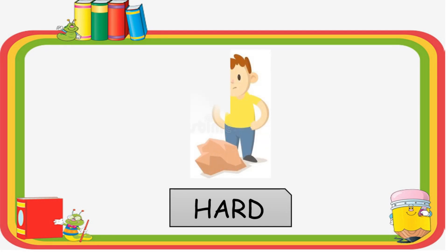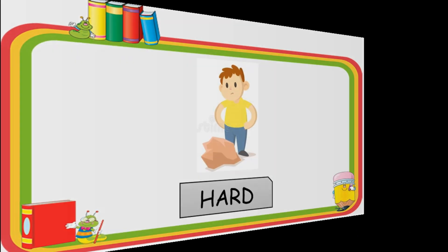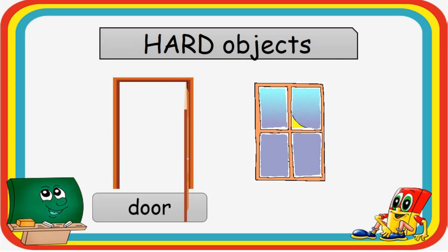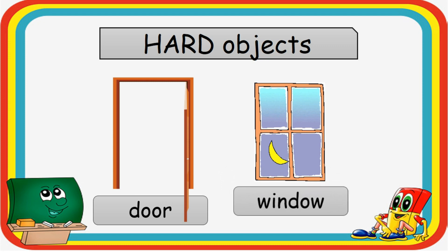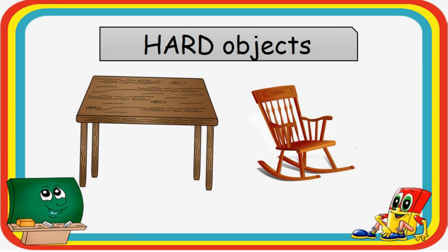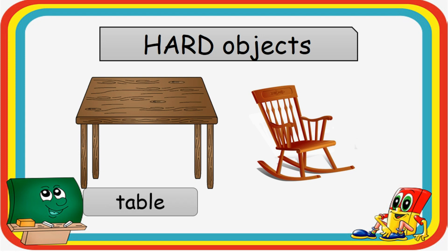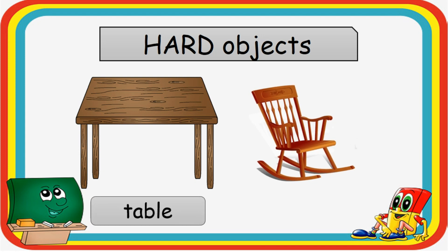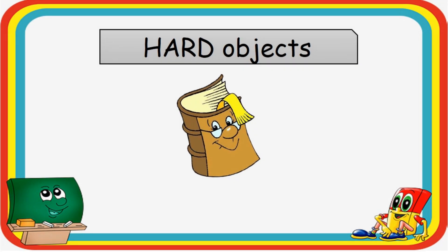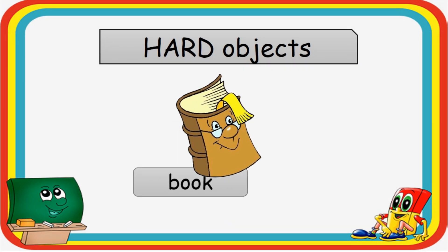Here are the examples of hard objects: door, window, table, chair, and book.